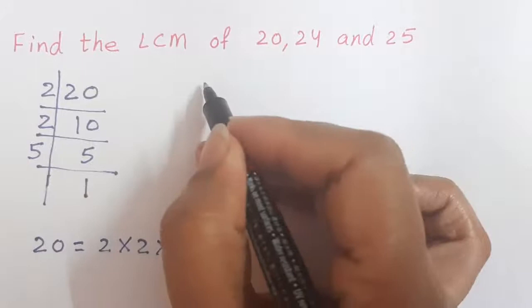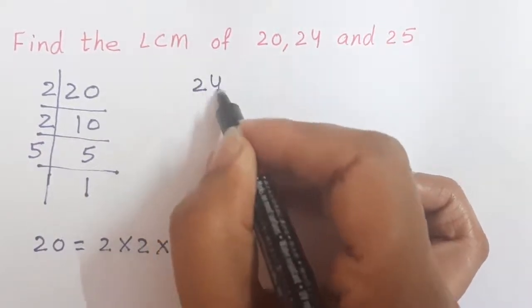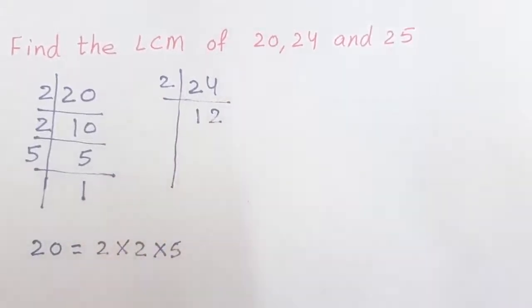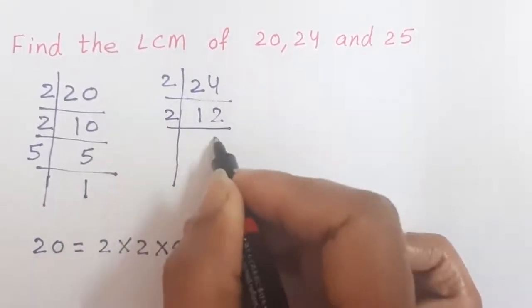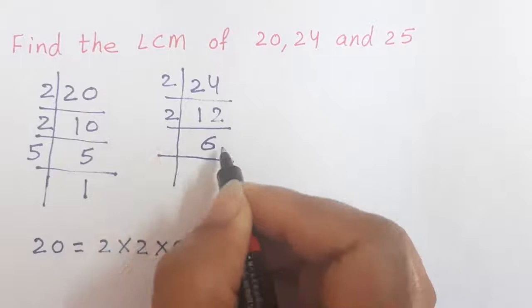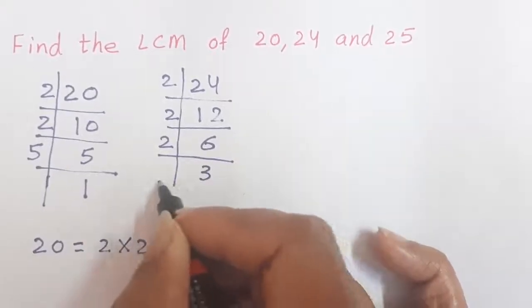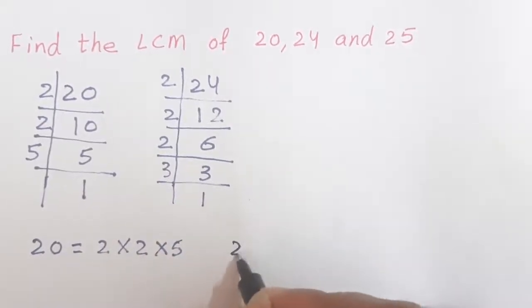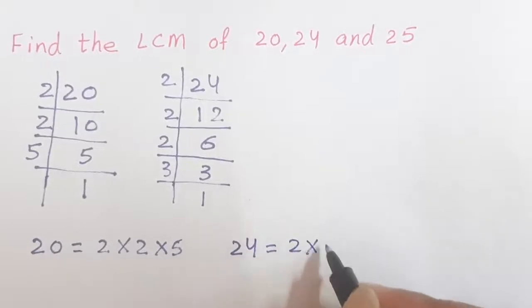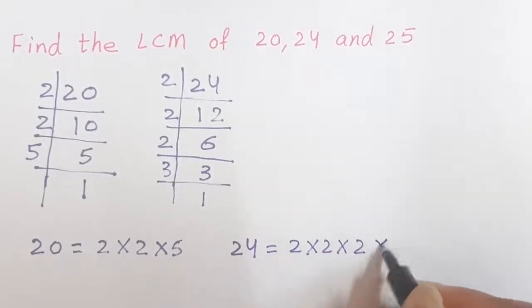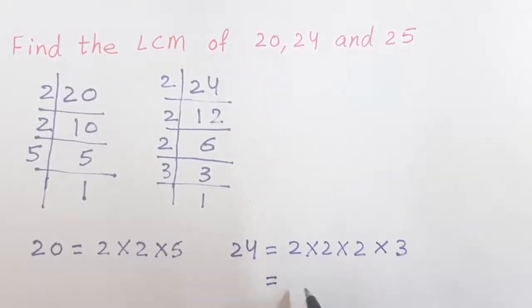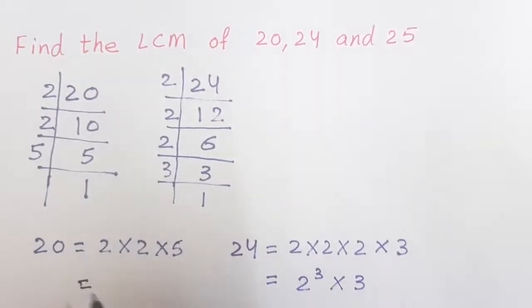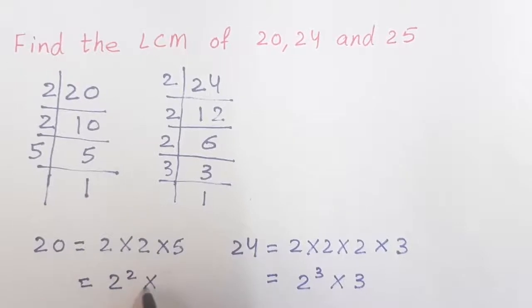Now, let us find for 24. 2, 12s are 24, then 2, 6s are 12, then 2, 3s are 6 and 3, 1s are 3. So, 24 is 2 multiply by 2 multiply by 2 into 3, or you can write this as 2 power 3 into 3. Similarly, for 20 also, 2 power 2 into 5.